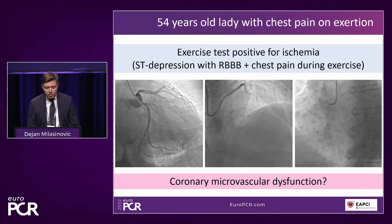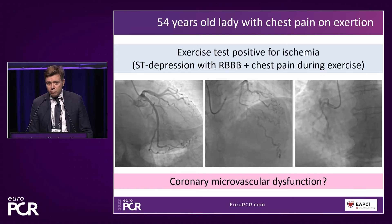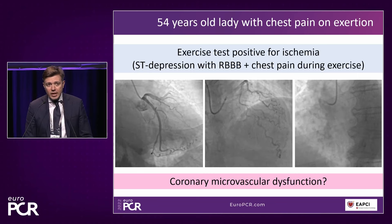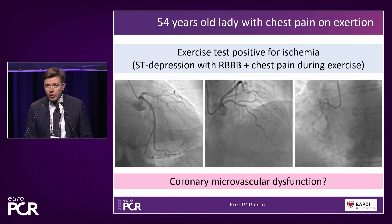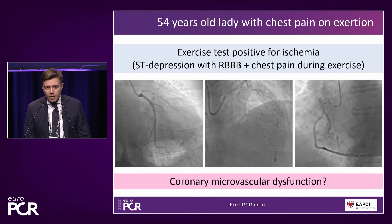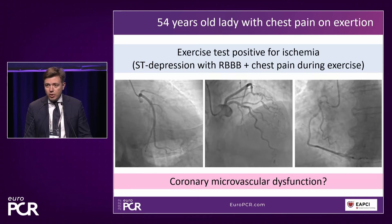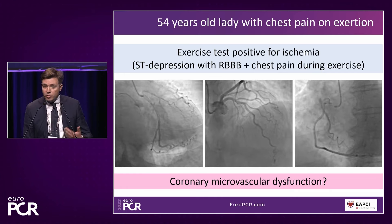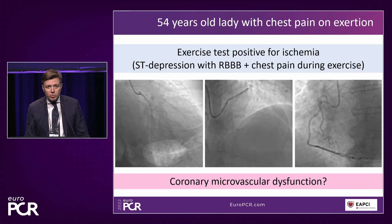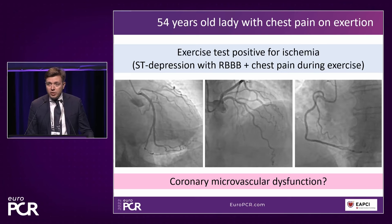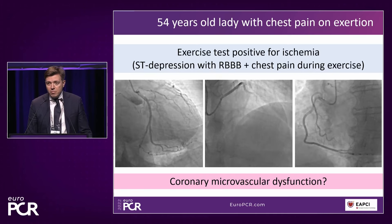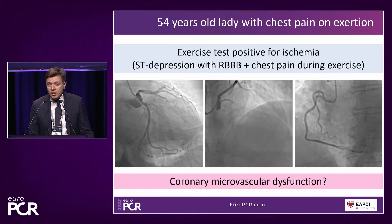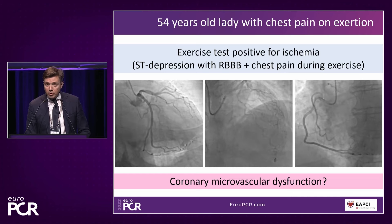I'm going to show a case we recently had and how we interpreted the indices, and how it really changed the clinical situation for this patient. This patient is a 54-year-old lady — a nurse from our hospital — with typical chest pain on exertion and positive non-invasive testing: an exercise test with ST depressions, incomplete right bundle branch block, and chest pain during the test. We really trusted this was a positive test and went into coronary angiography expecting epicardial disease — however, there was nothing.